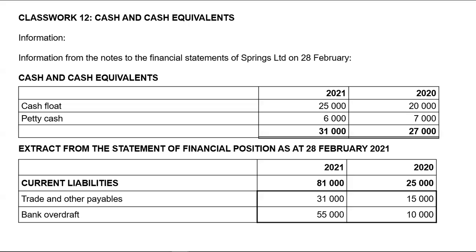If you have been checking out the previous videos, you should know that an increase in bank overdraft is a reduction of cash. It means that we went more into bank overdraft. Remember bank overdraft is a liability — it means we took more money from the bank. We are owing the bank, and any increase, or in this case any reduction in our bank, results in cash outflow.